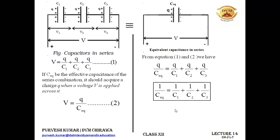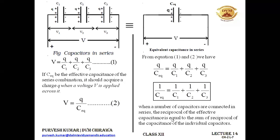So in series combination, the reciprocal of the effective capacitance equals the sum of the reciprocals of the individual capacitances. This is opposite to resistors in series, where we simply add the resistances. For capacitors in series, the formula is similar to that for parallel resistors.